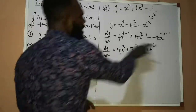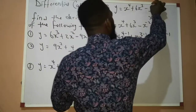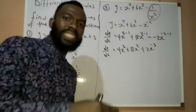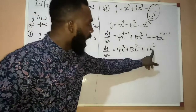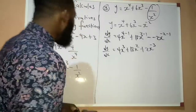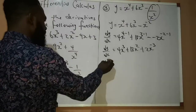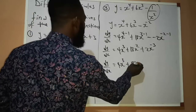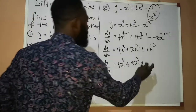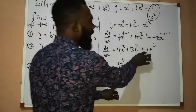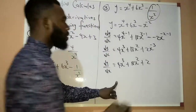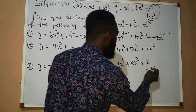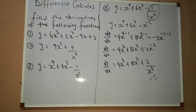Now I won't leave that as my final answer, because in our original question the last function was in a fraction — x was at the denominator. So I will bring this x back to the denominator. Finally, dy over dx is equal to 4x raised to the power of 3 plus 18x raised to the power of 2 plus 2 over x raised to the power of 3, because the negative power of 3 becomes a positive power of 3 when brought down. And this becomes the answer to the question.